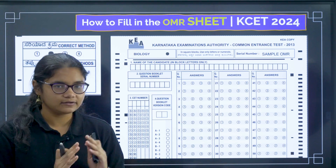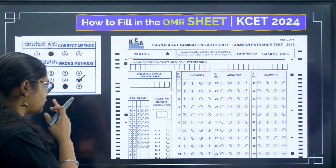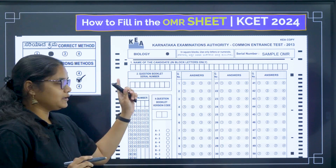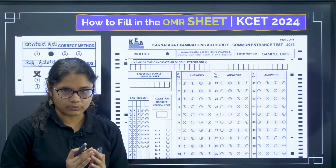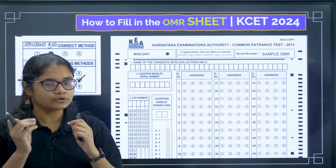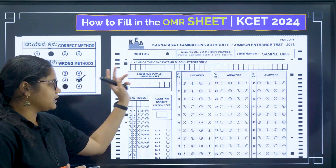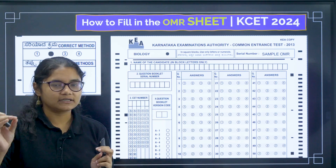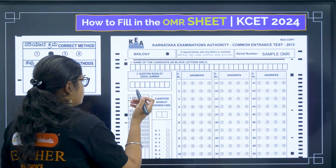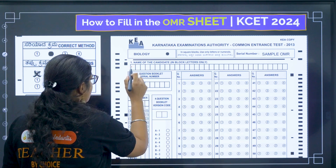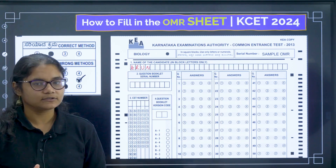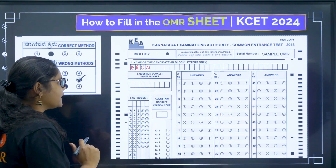The first column in the OMR sheet is the name of the candidate. You have to write your full name using block letters only. In the exam, you are allowed only a blue or black ballpoint pen. Write the full name exactly as it appears in your admit card — for example, if your name is Arun, write A-R-U-N in block letters.